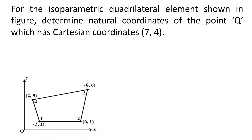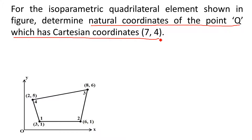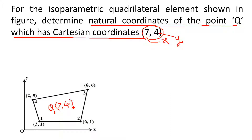The statement of the problem is: for the isoparametric quadrilateral element shown in the figure, determine the natural coordinates of point Q, which has Cartesian coordinates x=7 and y=4. So if you select any point Q in the quadrilateral whose Cartesian coordinates are (7, 4), the question is: what are the natural coordinates of that point Q?